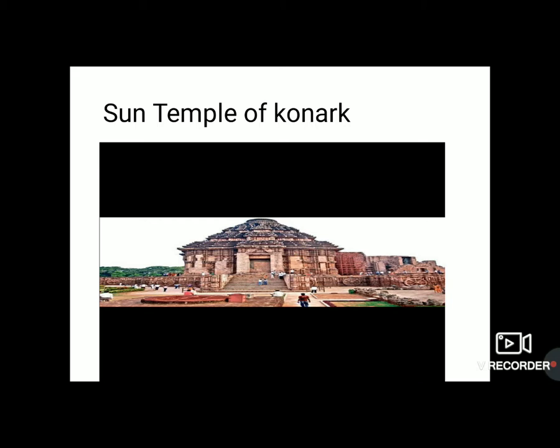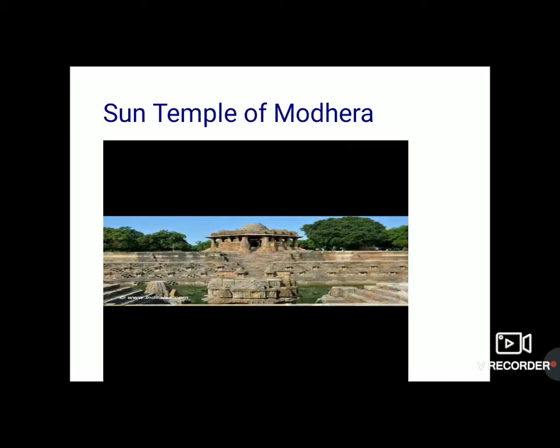Among the other sun temples of India, the Marthan temple of Kashmir and the Modhera Sun temple of Gujarat are famous. The Modhera Sun temple of Gujarat is made in such a way that the first ray of the sun falls directly on the idol of the temple.